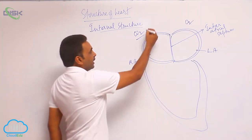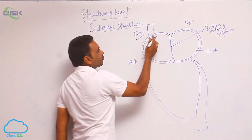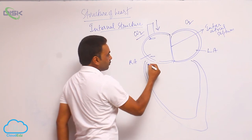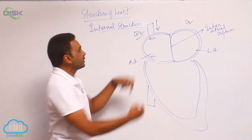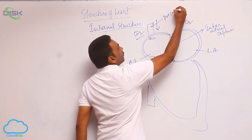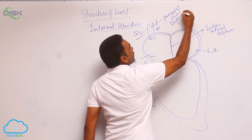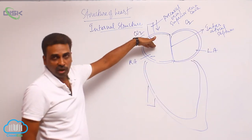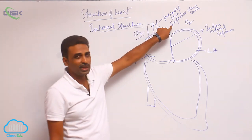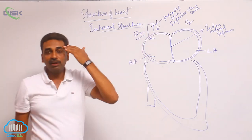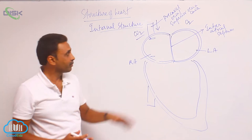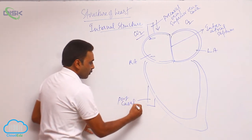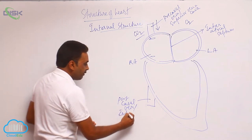The right atrium collects deoxygenated blood via two major blood vessels. One at the top opening into the right atrium is the precaval vein, also called the superior vena cava. Now this postcaval vein is also called the inferior vena cava, and it brings blood from the abdomen and lower limbs into the right atrium.